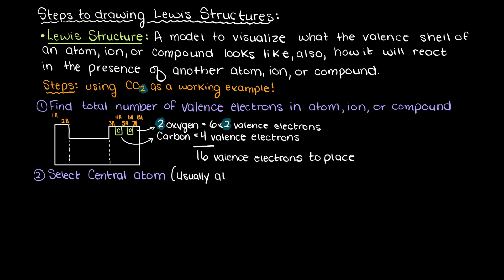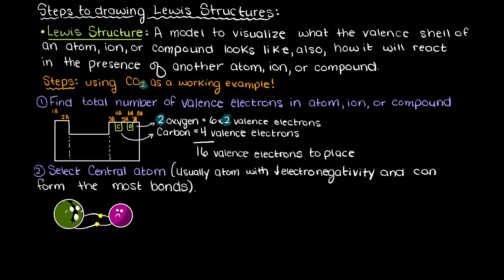However, as a general rule, it is often the atom that can make the most number of bonds and is the least electronegative. Electronegativity is just an atom's ability to hog a shared pair of electrons, but again we will talk about that more in depth in a future video.